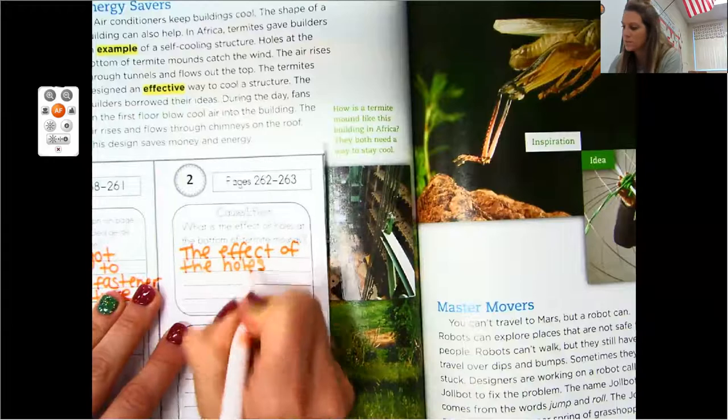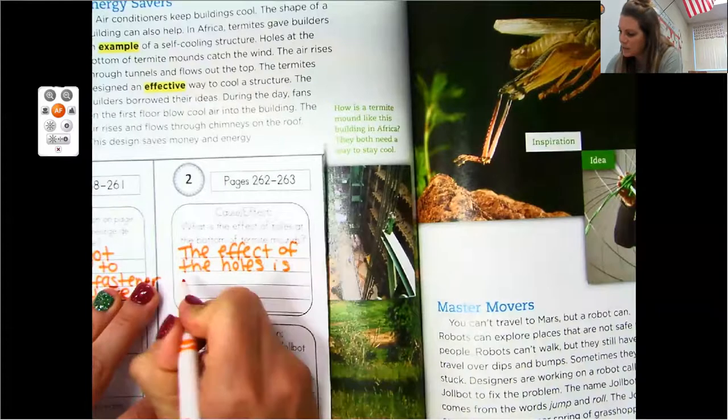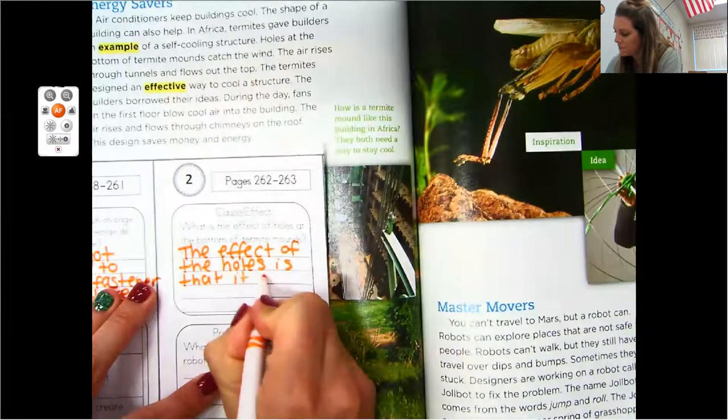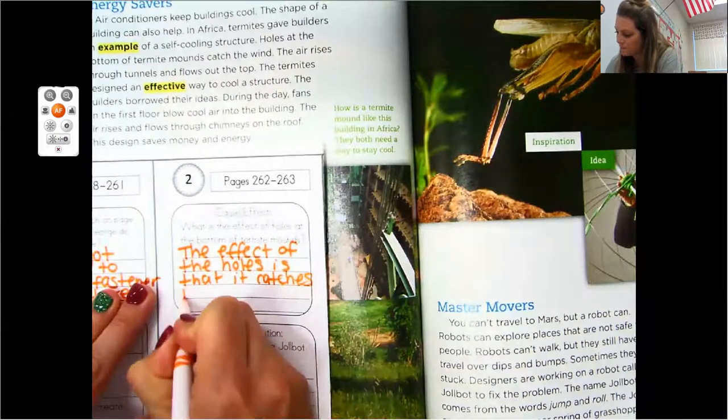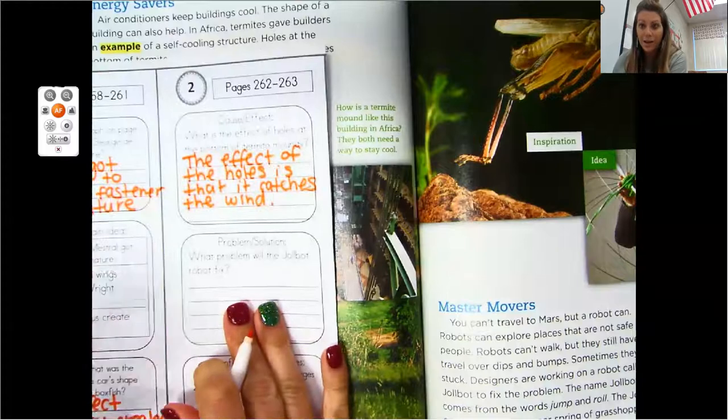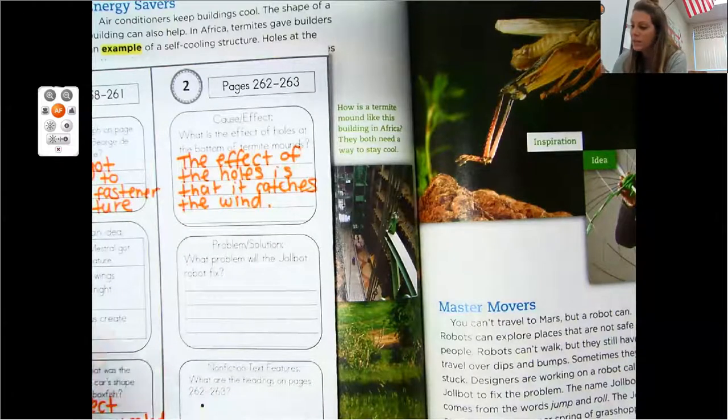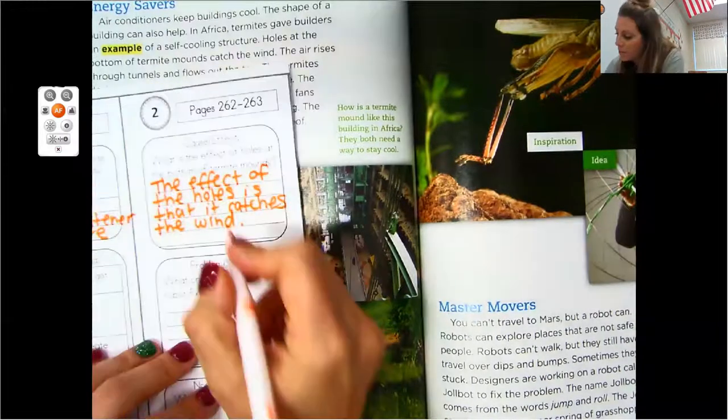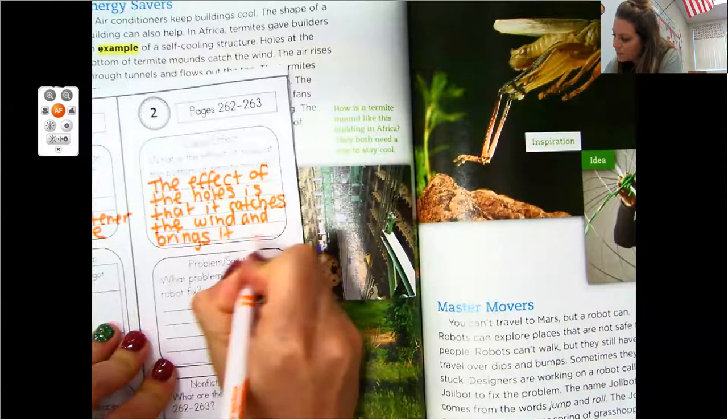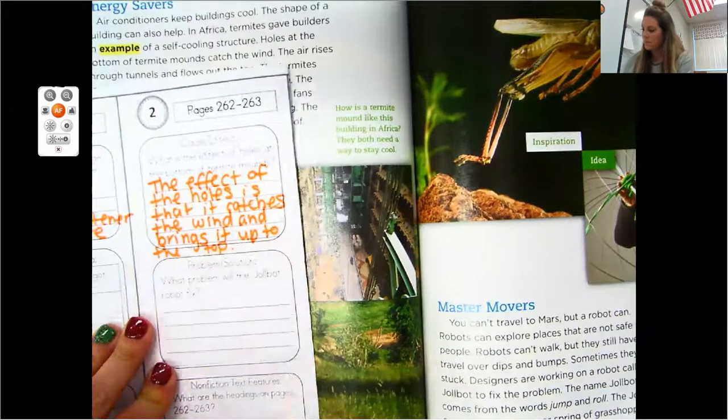The effect of the holes. The effect of the termite mound is that right here. It catches the wind. Because there are holes in the bottom of the termite mound, it catches the wind and brings it to the top.